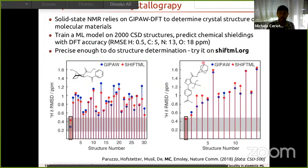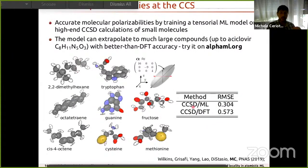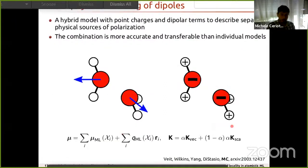You can also predict properties other than energy. For example, NMR chemical shieldings — you can try this yourself at shiftml.org, where you upload a molecular structure and get the NMR chemical shielding for each nucleus in the crystal. Using the tensorial framework with coupled-cluster reference calculations for small molecules, we achieve accuracy that beats density functional theory by a factor of two while being orders of magnitude faster.